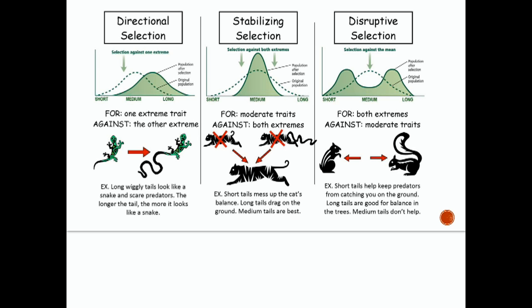Let's look at these examples of all three curves where all three are actually talking about an animal's tail length. Starting off at this directional selection one, we've got tail length across the x-axis with short, medium, and long tails. In directional selection, it's moving over and the environment is now favoring the long tails. This long wiggly tail looks like a snake and can scare predators. The longer the tail, the more it looks like a snake and the more it can scare predators and the greater chance that they have to survive and reproduce. Their offspring will also have that long tail. Directional selection.